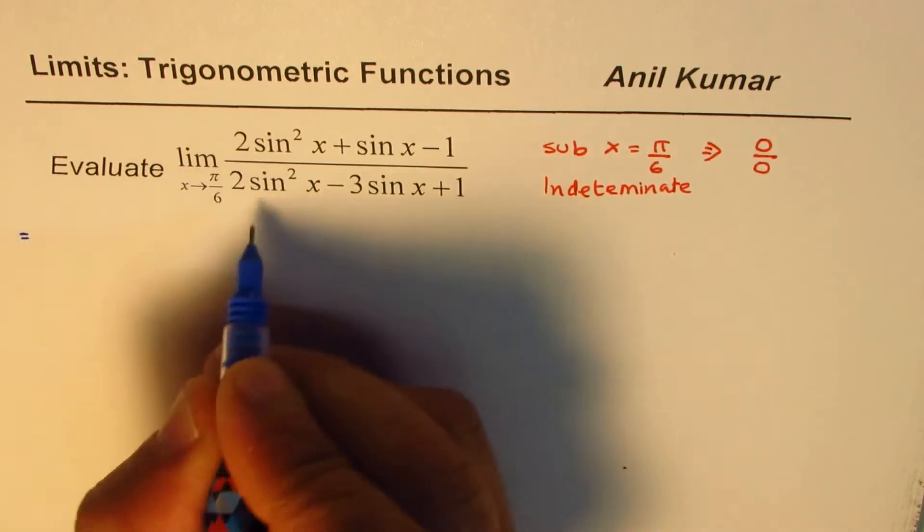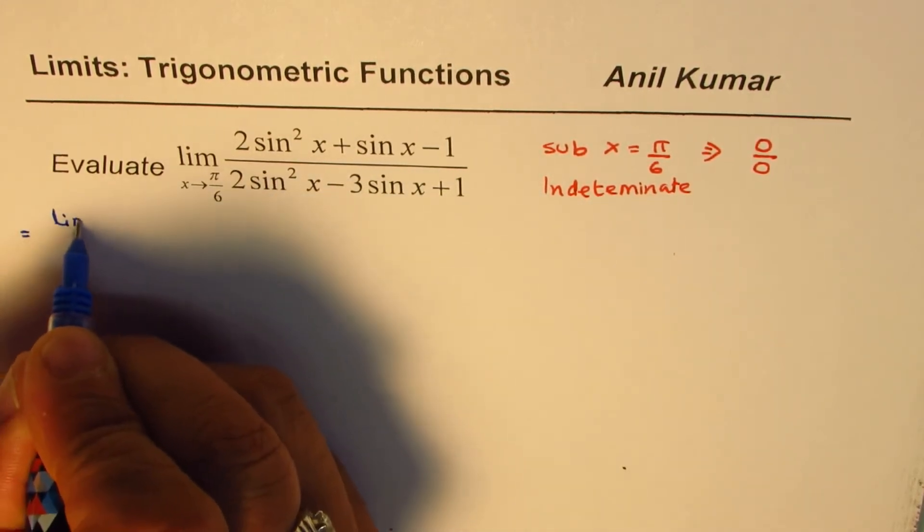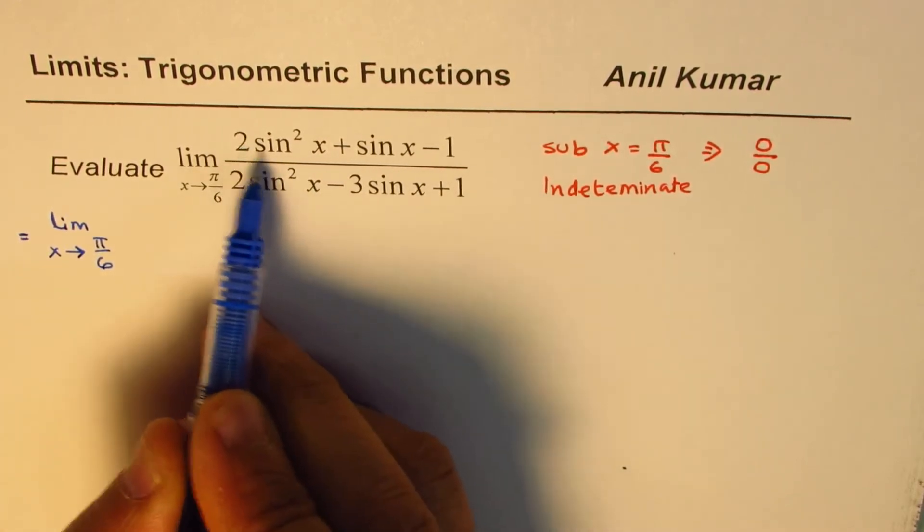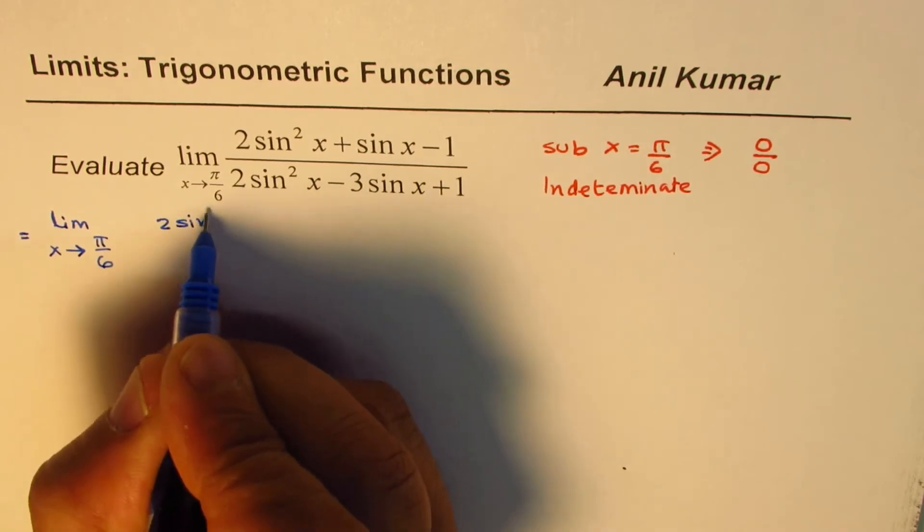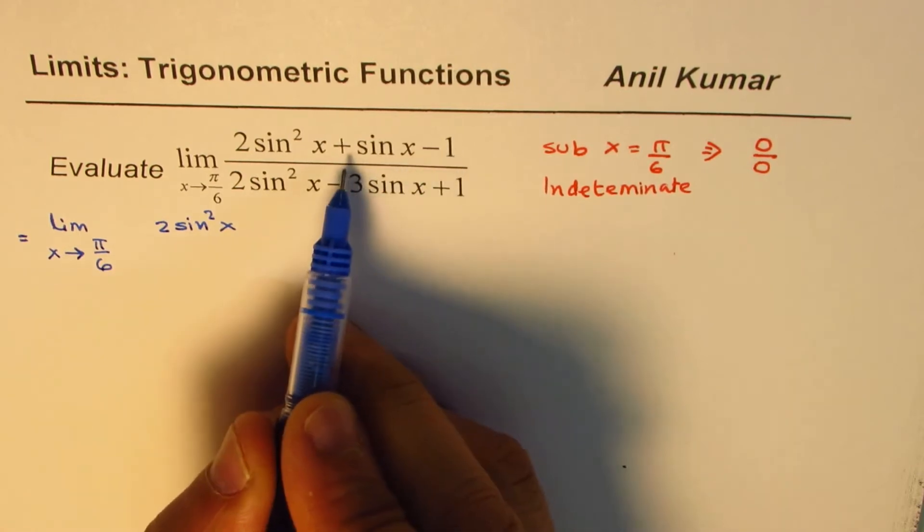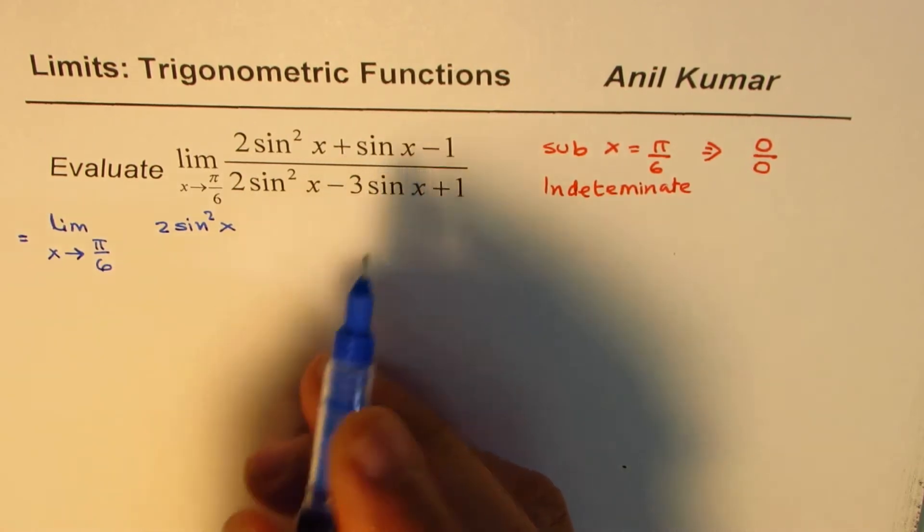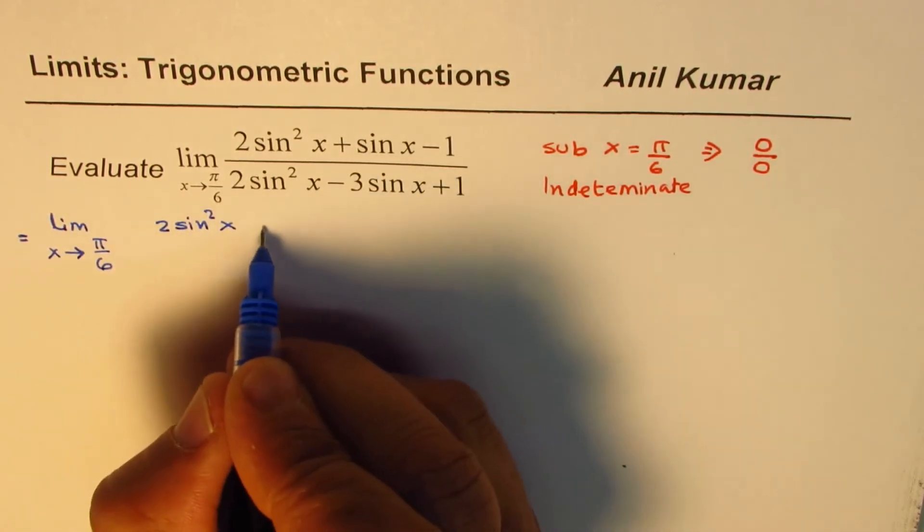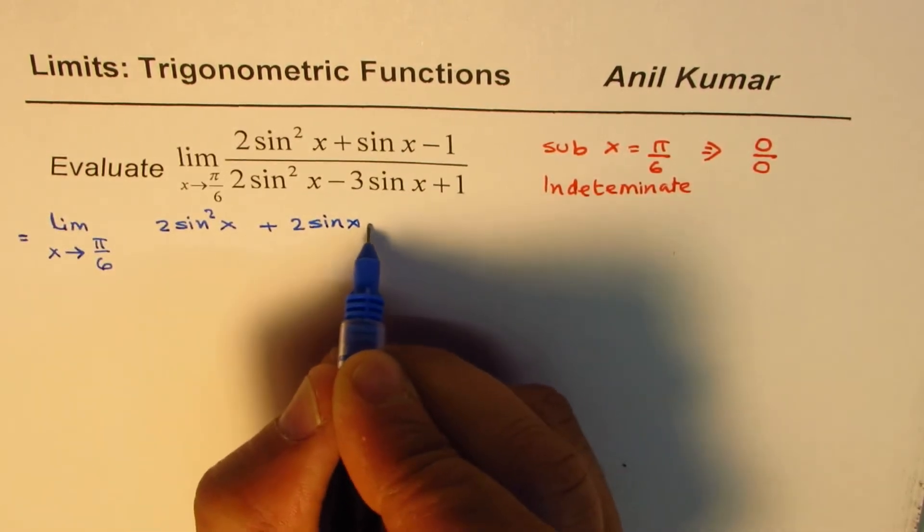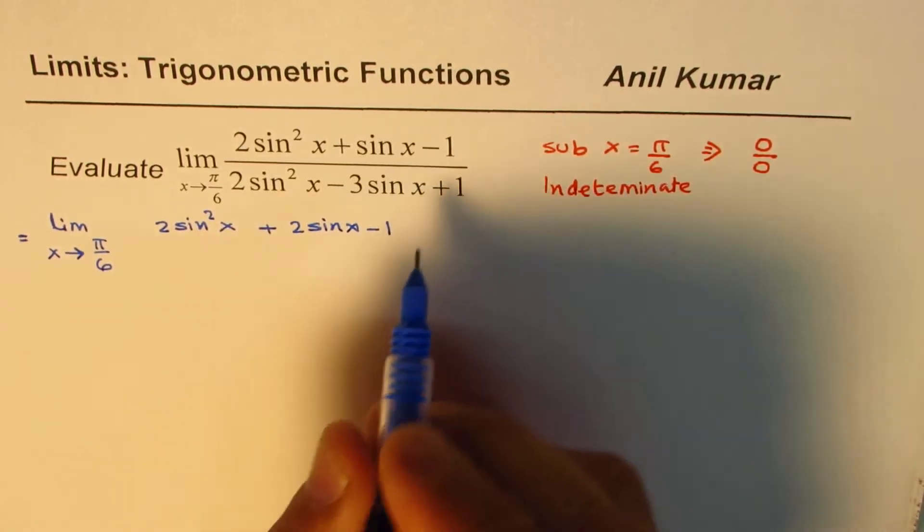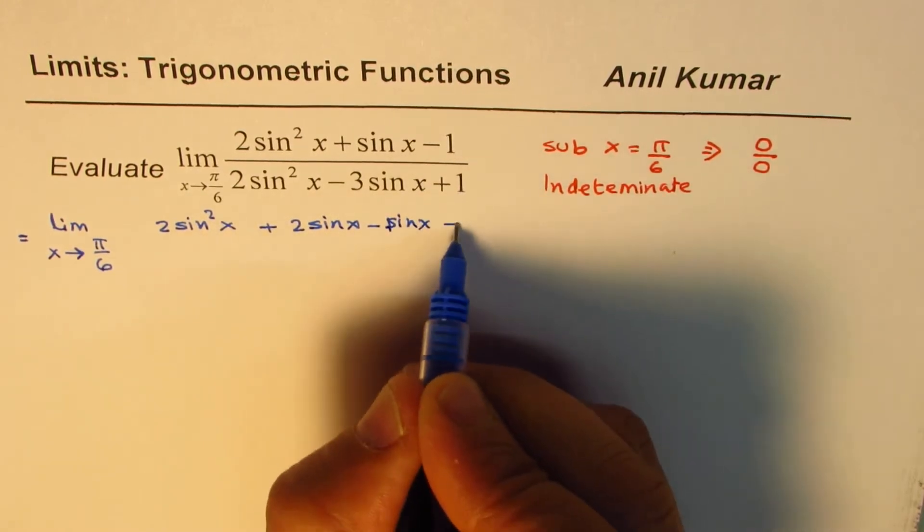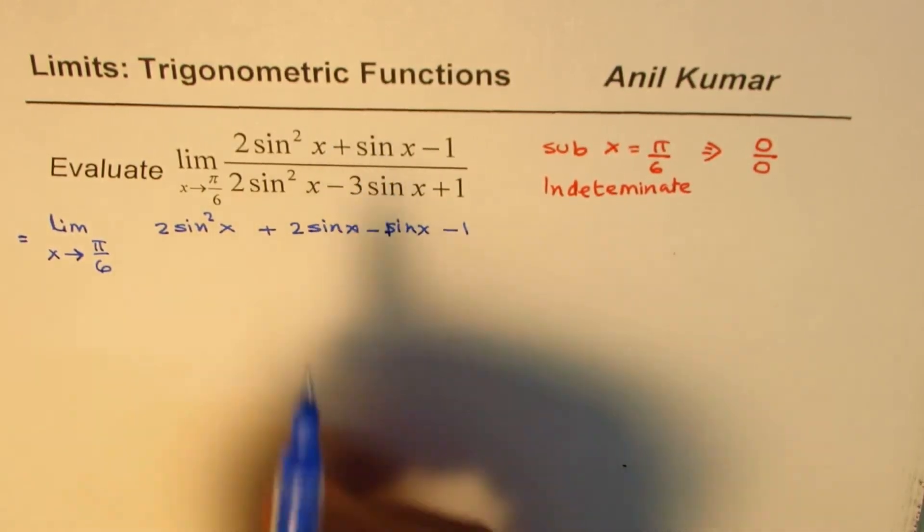So let us rewrite this function. We need to find limit x approaches π/6. 2sin²x. Now 2 times -1 is -2. We have to get sum as plus sinx. So that means what we could do is we could write sinx as 2sinx minus sinx. So that is how I split the sinx, minus sinx and then minus 1. So 2sinx minus sinx is sinx.